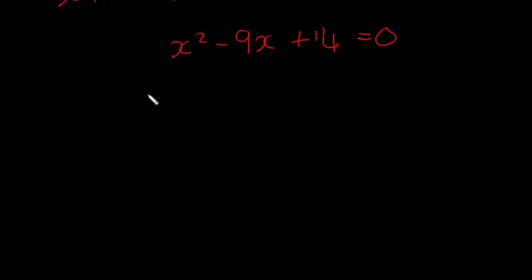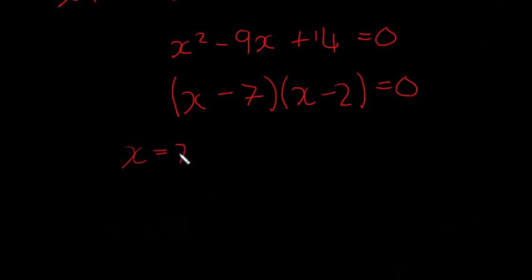So now we're going to factorize this here. This is a quadratic. We're going to have x, we're going to have x. It's equal to 0. We're going to pick minus 7 and minus 2. We're going to pick x minus 7 and x minus 2 because minus 7 by minus 2 is plus 14 if you multiply them, and if you add them, minus 7 plus minus 2 is minus 9.